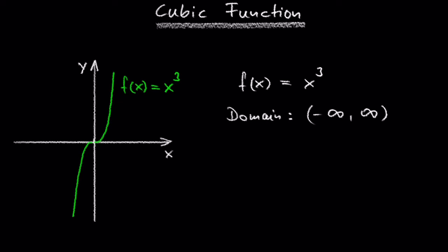The same applies to the vertical extent of the graph. So the range also includes all real numbers. In other words, the range goes from negative infinity to positive infinity.